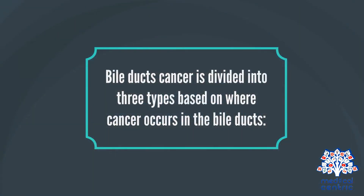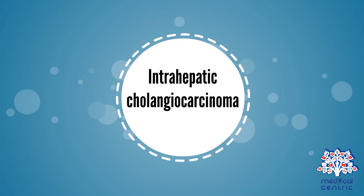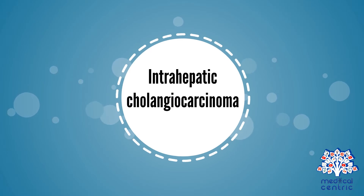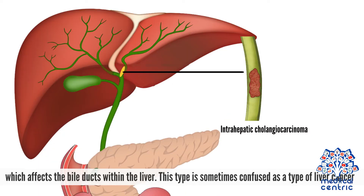Bile duct cancer is divided into three types based on where cancer occurs in the bile ducts. The first is intrahepatic cholangiocarcinoma, which affects the bile ducts within the liver. This type is sometimes confused as a type of liver cancer.